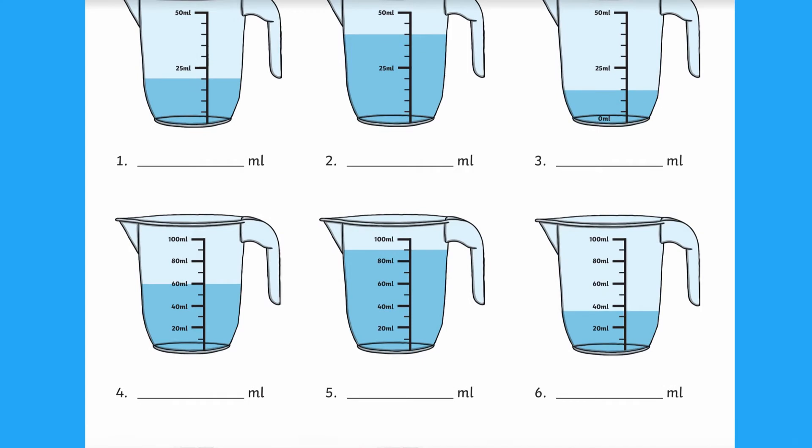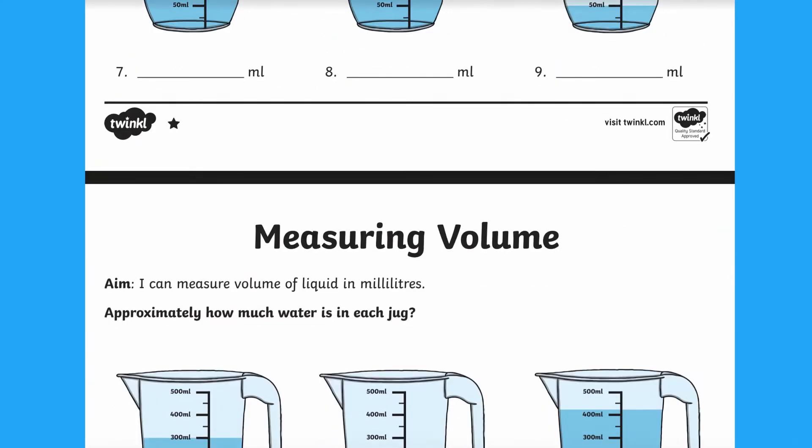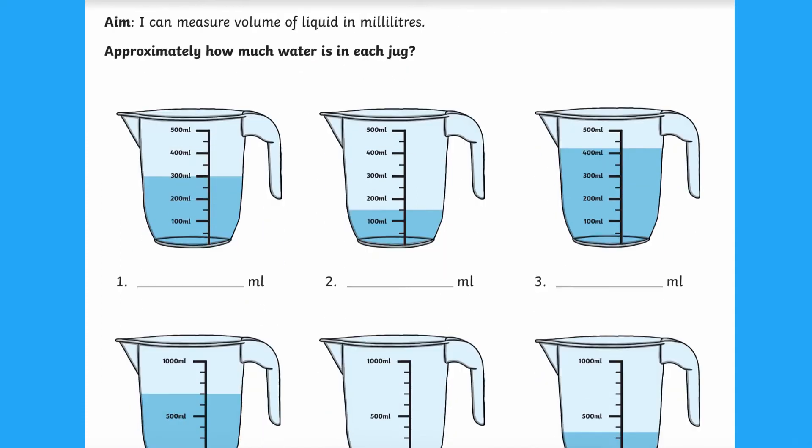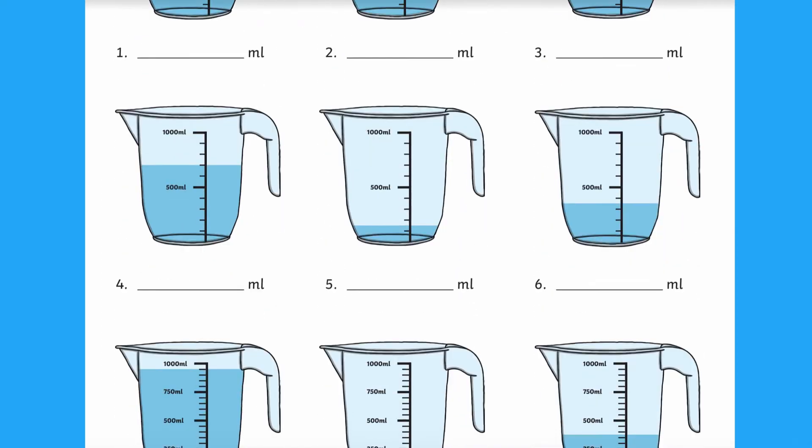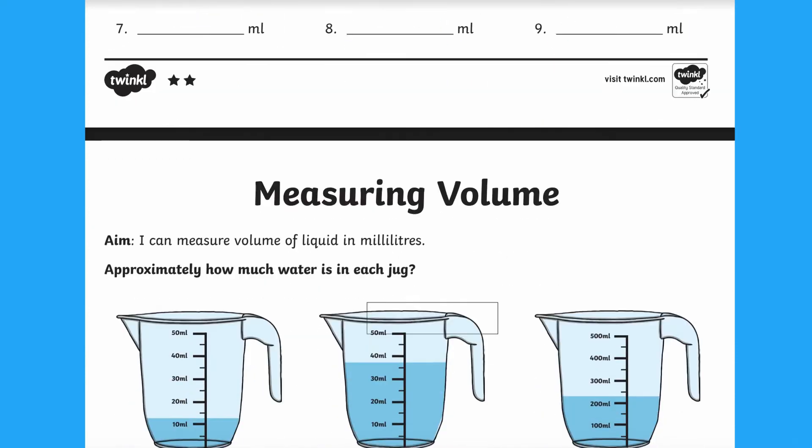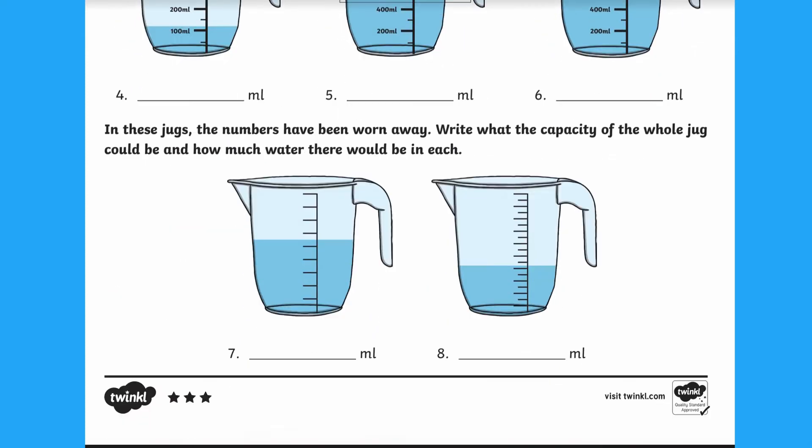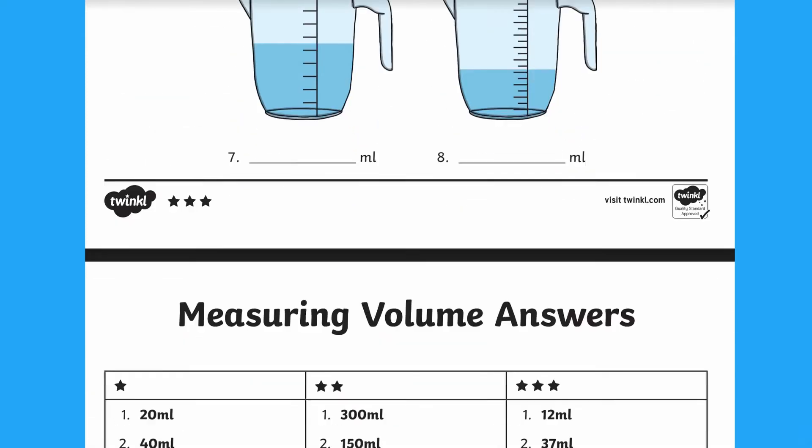This volume and capacity differentiated worksheet helps children develop their understanding of measuring the volume of liquid in milliliters. The jugs have a wide range of different capacities on them, encouraging the children to identify how the increments change with a handy visual guide there to help them understand how the concept works both in theory and in real life.